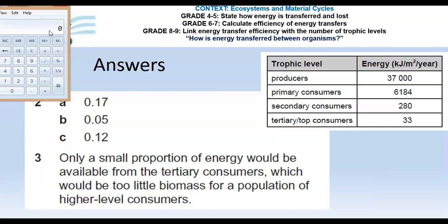Part C: from secondary consumers to top consumers. The top consumer value is 33, so we divide that by 280, which is provided by the secondary consumer. That gives a value of 0.11785, so to two decimal places that's 0.12.